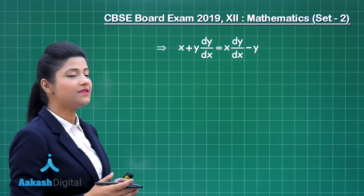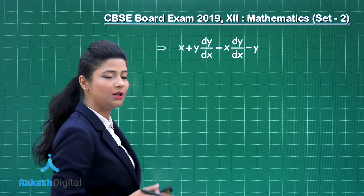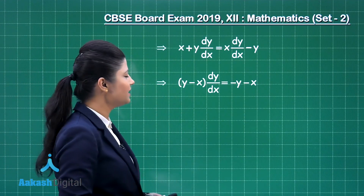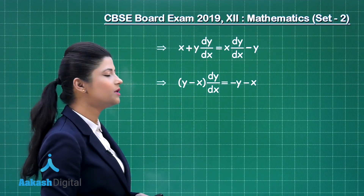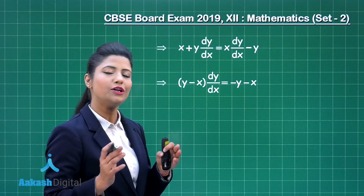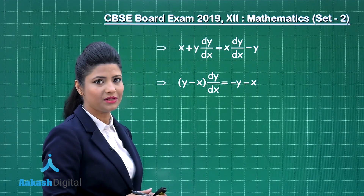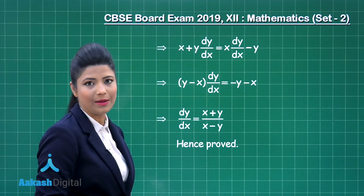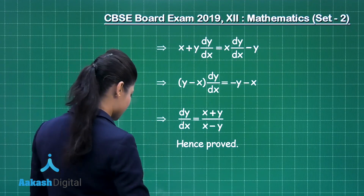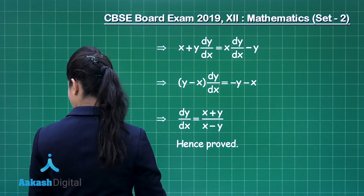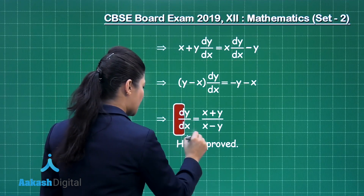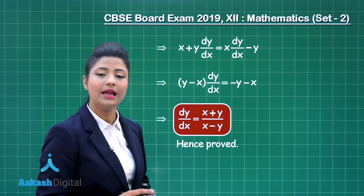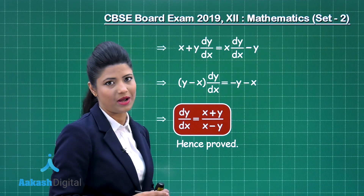Let us club the like terms together. Transposing the terms containing dy/dx to the left-hand side gives y minus x times dy/dx equal to minus y minus x. Taking minus common from both sides and simplifying, you obtain dy/dx is equal to x plus y upon x minus y. This is the required answer — we needed to prove that dy/dx equals x plus y upon x minus y.